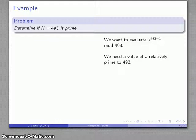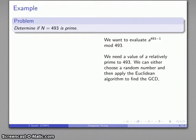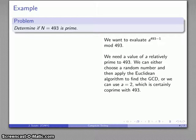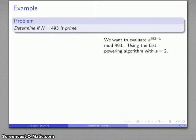Now I need to find a value of a that's relatively prime to the modulus. What I could do is pick a number and then check using the Euclidean algorithm to see that it's relatively prime, but let's take the easy way out. I know this is an odd number, so a equals 2 will definitely be co-prime with 493. So I'll evaluate 2 to the 493 minus 1.